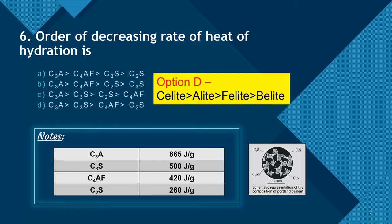In cement, C3S (tricalcium silicate) constitutes about 30–50%, C2S about 20–45%, C3A about 8–12%, and C4AF about 6–10%. C3S increases resistance to freezing and thawing because it has high strength and a heat of hydration above 500 J/g. C3A is responsible for flash setting and is also liable for sulfate attack, and it is the least stable compound.